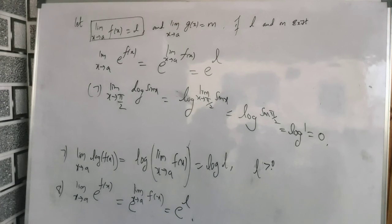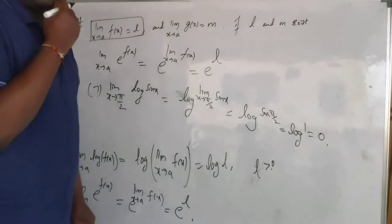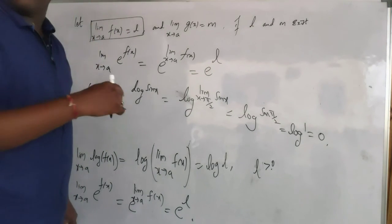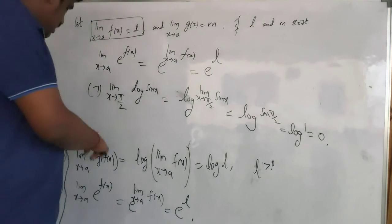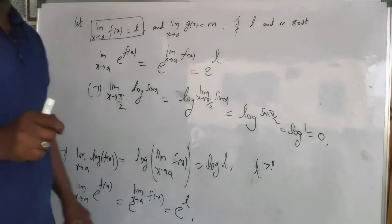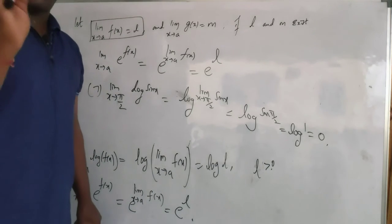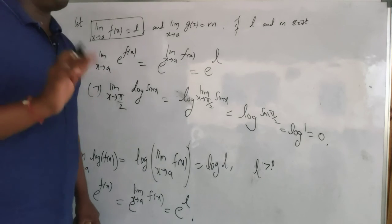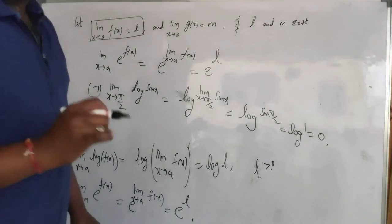This is how we apply the properties. These are the 8 properties in total — in the previous lecture I explained 3 properties, and in this lecture 5 more properties, making 8 altogether. Now you are going to learn standard formulas, which is a very important concept.